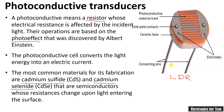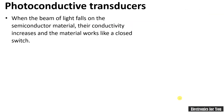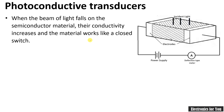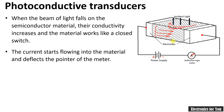There are two terminals and a ceramic base. The symbol for the LDR is shown here. When the beam of light falls on the semiconductor material, the conductivity increases and the material works like a closed switch. In the circuit arrangement for the photoconductive transducer, a positive terminal and a negative terminal are applied, and a deflection meter is used. When light is incident on the semiconductor material, conductivity increases, resistance decreases, and current starts flowing through the circuit, causing deflection in the meter.